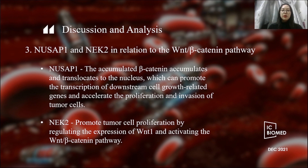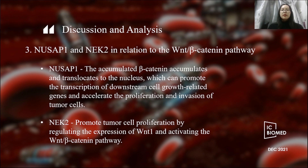NASAP1 and NASAP2 are also closely related to the Wnt/beta-catenin pathway. When the Wnt/beta-catenin pathway is overactive, cell proliferation may be out of control and tumor cells appear. NASAP1 is able to enhance beta-catenin signaling by inhibiting the activation of GSK3-beta. Accumulated beta-catenin translocates to the nucleus and promotes transcription of downstream cell growth-related genes, accelerating the proliferation and evasion of tumor cells. NASAP2, on the other hand, can activate the Wnt/beta-catenin pathway by regulating the expression of WNT1 and promote the proliferation of tumor cells.